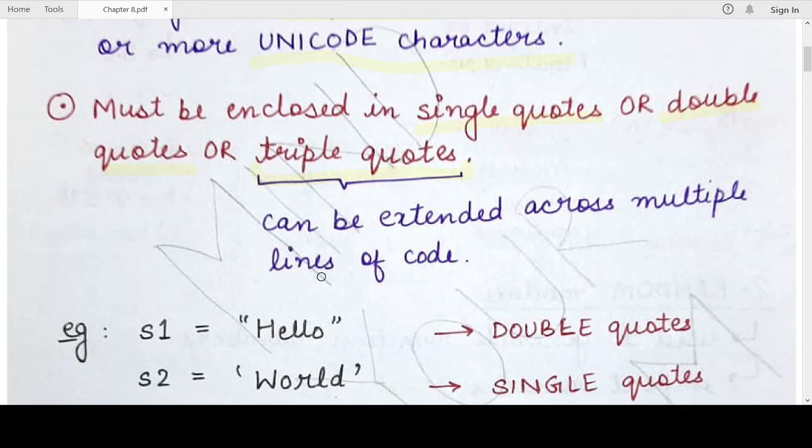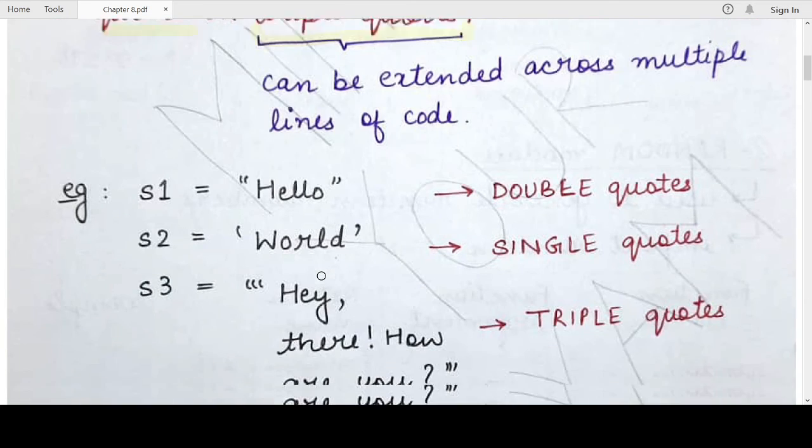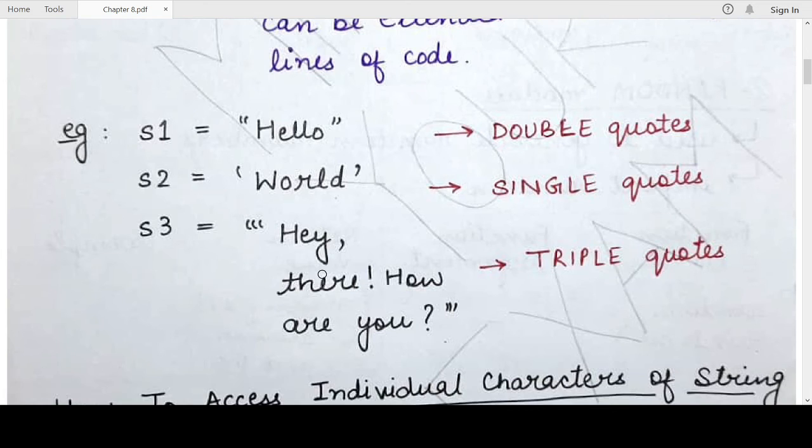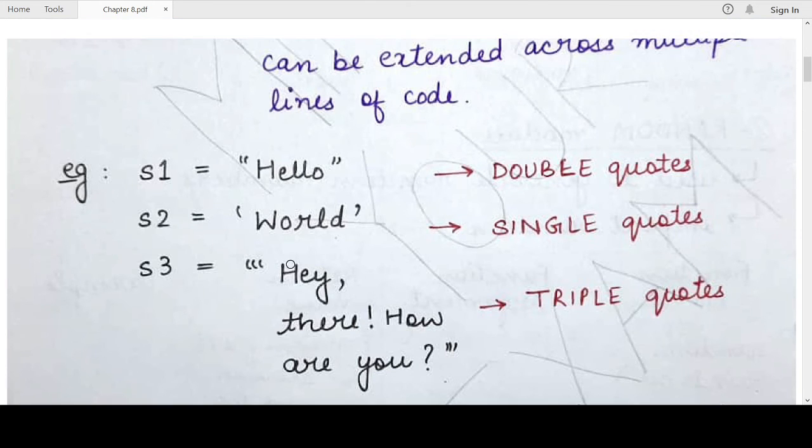This is a string named s1 which I have written in double quotes, and the value of the string is 'hello'. 'Hello' consists of multiple Unicode characters - five Unicode characters: h, e, double l, o.